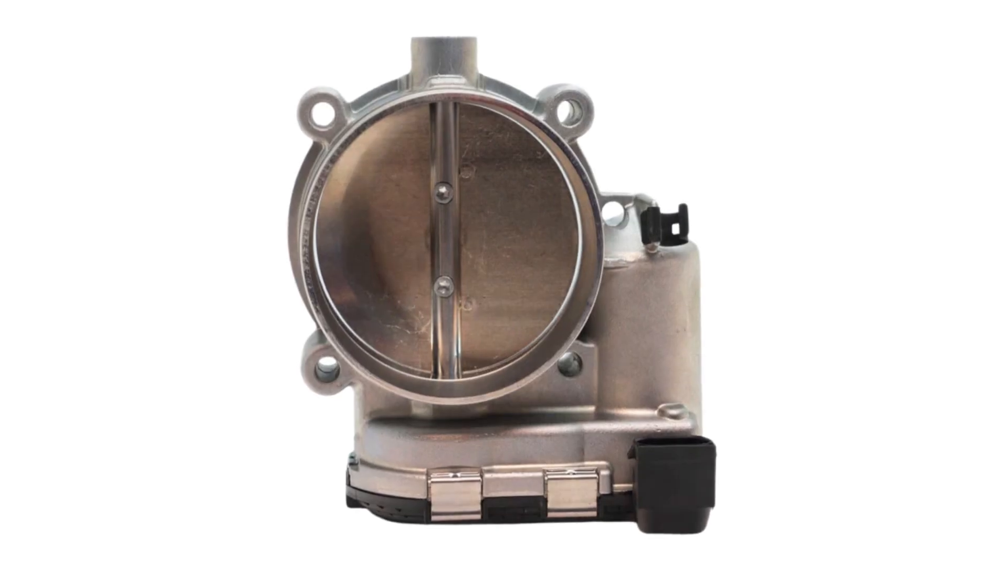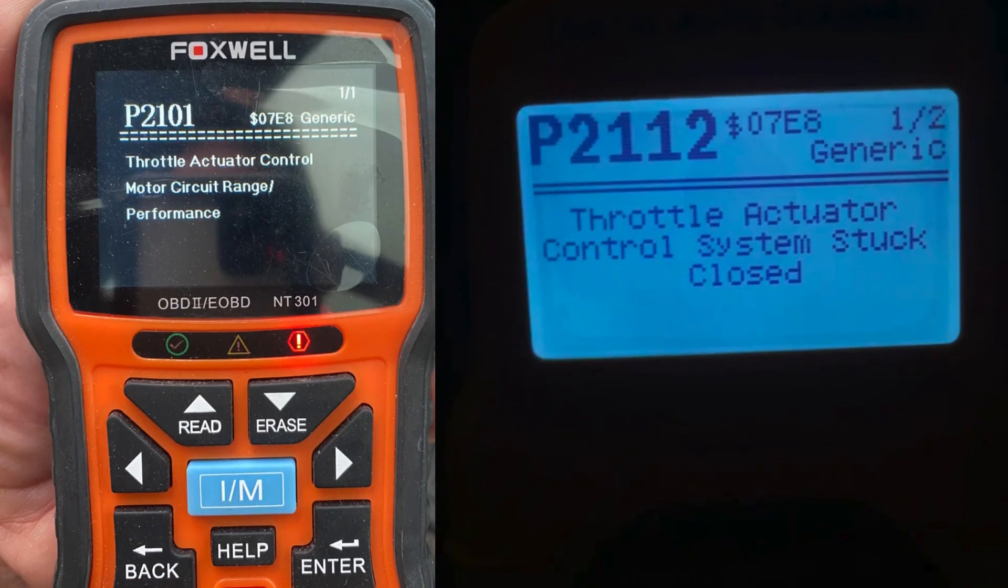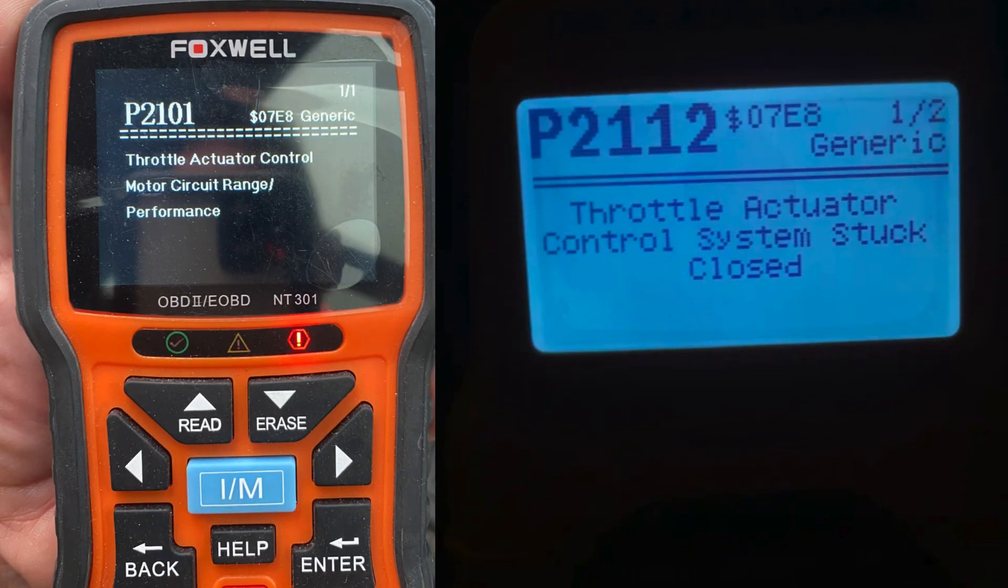If your throttle body is electrical, you might observe codes such as P2101 and P2112.